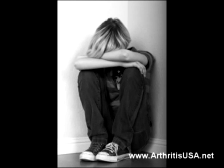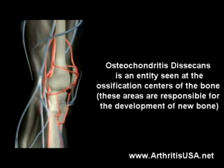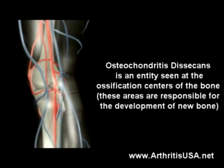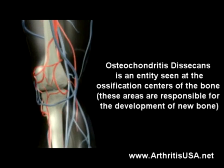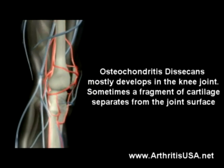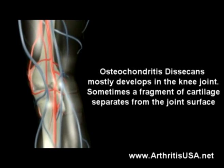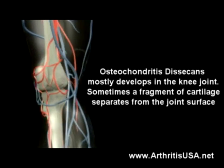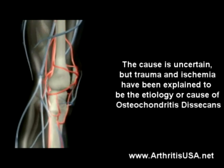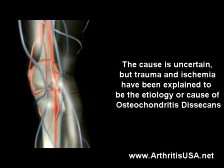Osteochondritis dissecans is typically seen in young males. It is an entity seen at the ossification centers of the bone — areas responsible for the development of new bone. It mostly develops in the knee joint. Sometimes a fragment of cartilage separates from the joint surface. The cause is uncertain, but trauma and ischemia have been proposed as the etiology.